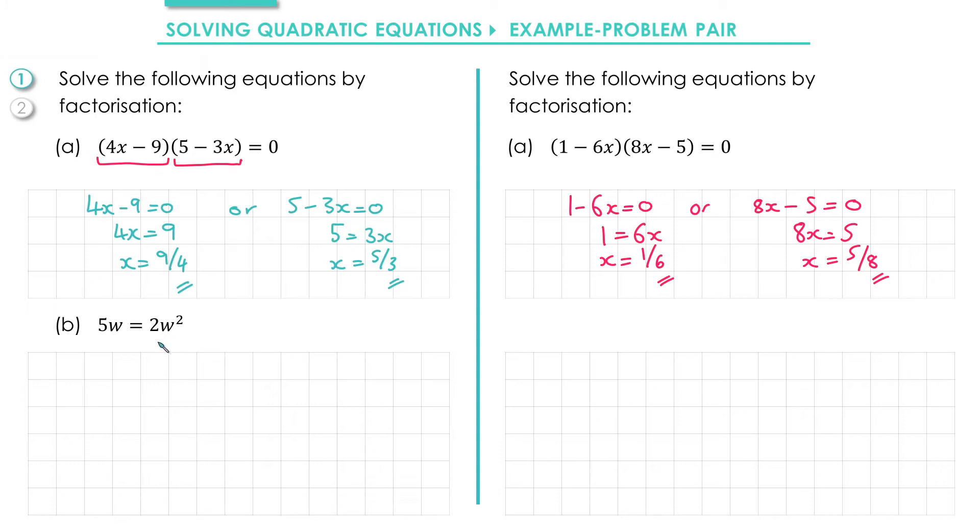The way I'm going to solve this is by first of all making the left hand side 0 by subtracting 5w. So I get 0 = 2w² - 5w. Now I have a common factor of w in both terms so I'm going to factorize using single brackets. w will come on the outside leaving me with 2w - 5 on the inside. That tells me that either w = 0, which I get from this term, or 2w - 5 = 0, which I get from this bracket. Adding 5 to both sides and dividing by 2 would give me w = 5/2.